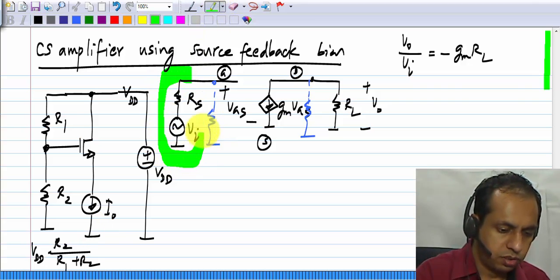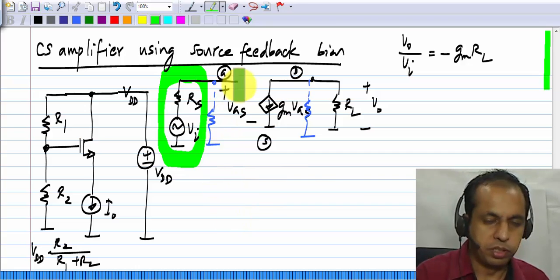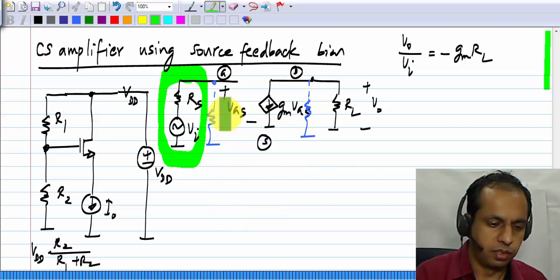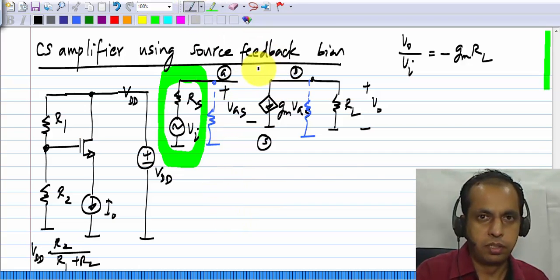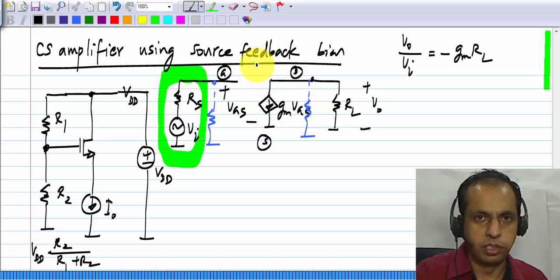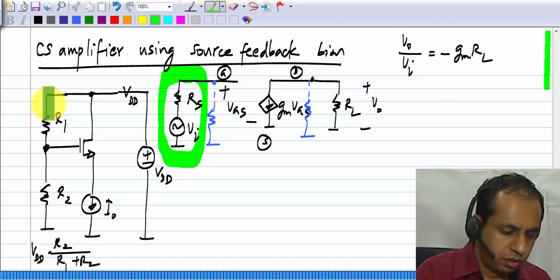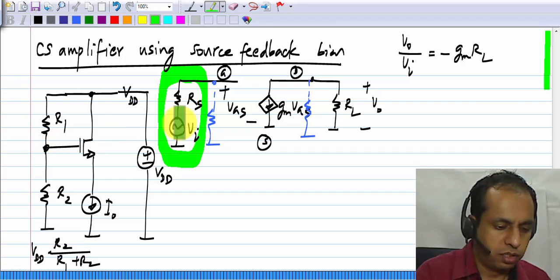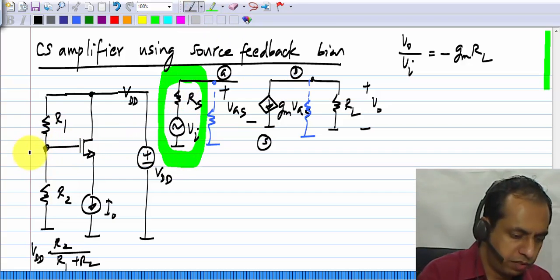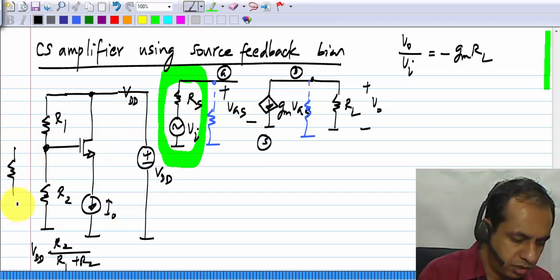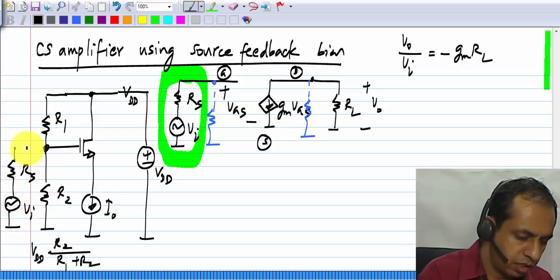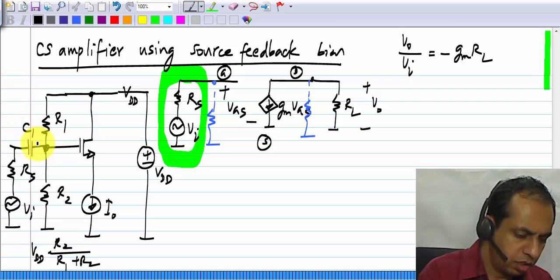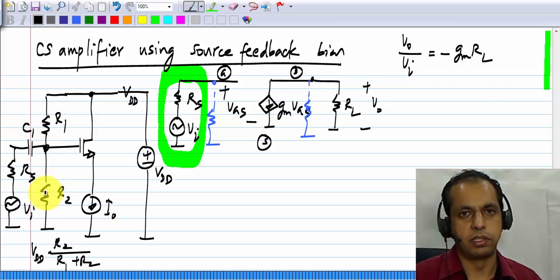Then, the signal source must be applied to the gate of the transistor. How do we do that? I won't spend much time on this, we have done this many times now. This part establishes the bias. To add the signal from this, what we have to do is Vi RS, and connect a coupling capacitor C1.